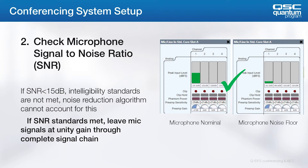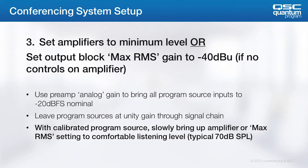Once the microphones are set to nominal level and we know the signal-to-noise meets the standard, we should be able to leave them at unity gain throughout the signal chain. The next step is to calibrate the near-end side of the system. For this step, we'll want to first turn the amplifiers all the way down. If there are no amplifier controls, reduce the max RMS setting of the Q-SYS output block all the way down to negative 40 dBU.